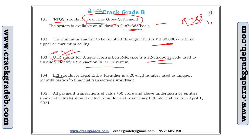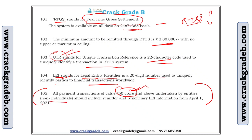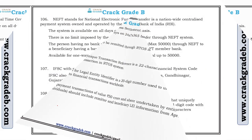LEI stands for Legal Entity Identifier and it is a 20-digit code that uniquely identifies parties to a financial transaction worldwide. The minimum value threshold is 50 crore for LEI. All payment transactions of value 50 crore and above undertaken by non-individuals should include remitter and beneficiary LEI information. This became mandatory from April 1, 2021.